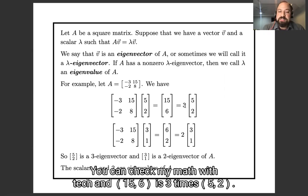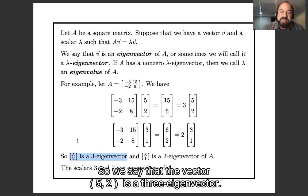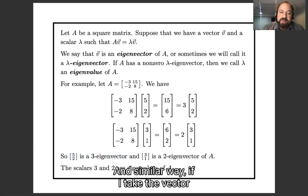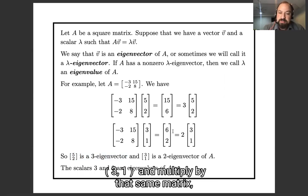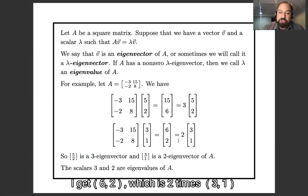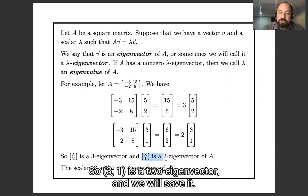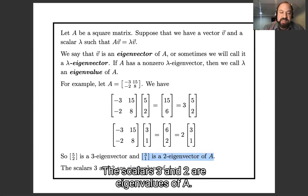And [15,6] is 3 times [5,2]. So we say that the vector [5,2] is a 3-eigenvector. Similarly, if I take the vector [3,1] and multiply it by that same matrix, I get [6,2], which is 2 times [3,1]. So [3,1] is a 2-eigenvector. And we would say that the scalars 3 and 2 are eigenvalues of A.